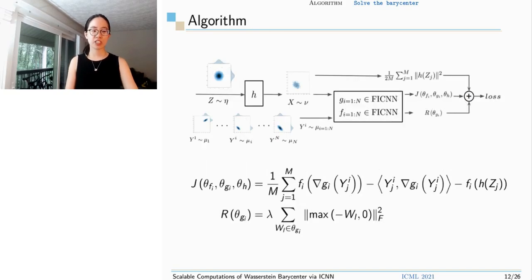In practice, we use a generator h to generate samples x from our estimated barycenter. And the input to h is samples from a trivial distribution, such as standard Gaussian. This guarantees that we could sample from estimated barycenter as many as we want. And the convex function sets are parametrized by fully-input convex neural networks. Other than the loss from last slide, we add one more loss, r_theta(g_i). This is because we loosened the constraint of non-negative weights in g_i and add a penalty instead. This could speed up the training process.